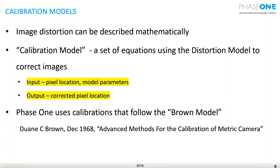At Phase One, we use calibrations that follow the Brown model. It's called the Brown model because it was developed and published by Dion Brown in December 1968 in his paper, "Advanced Method for the Calibration of Metric Cameras."